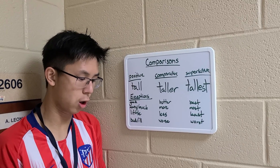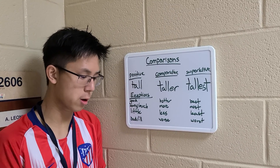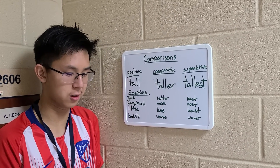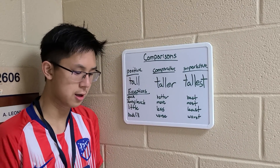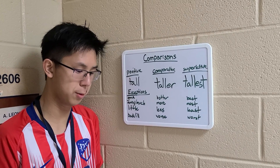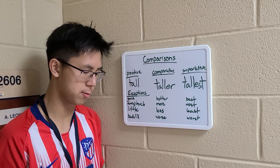Three-syllable words always use more and most for the comparative and superlative degrees, so beautiful is more beautiful and most beautiful.